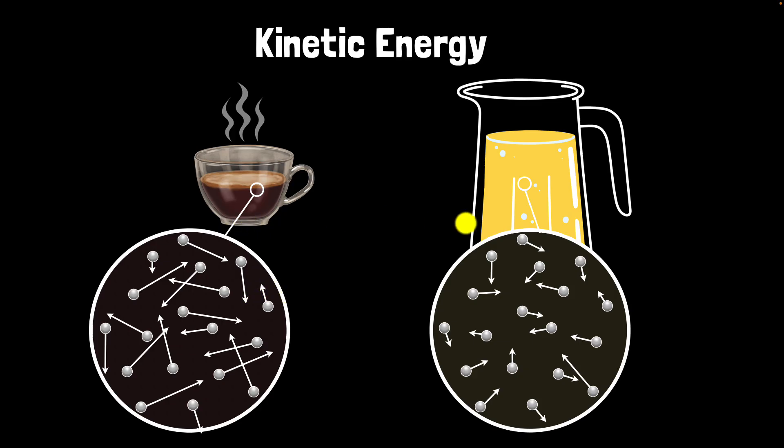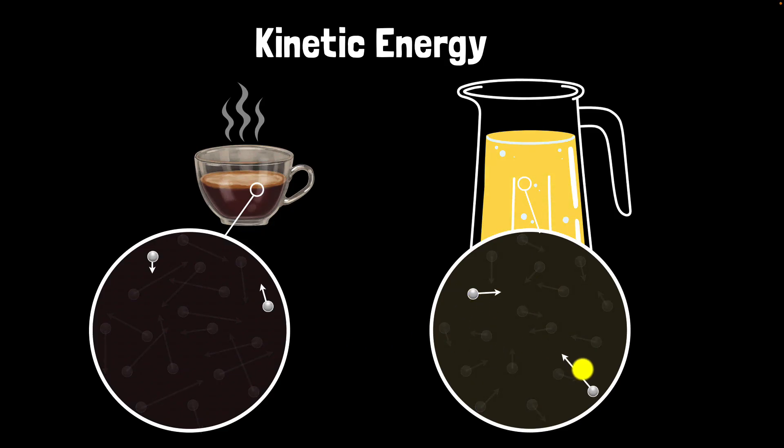But what difference do you notice between the kinetic energy of the particles here and particles over here? Well we notice the kinetic energy of the particles in the hot object is bigger than the kinetic energy of the particles over here. Well we need to be careful. I mean there are some particles over here in the cool lemonade which have higher kinetic energy than some particles of this hot object.